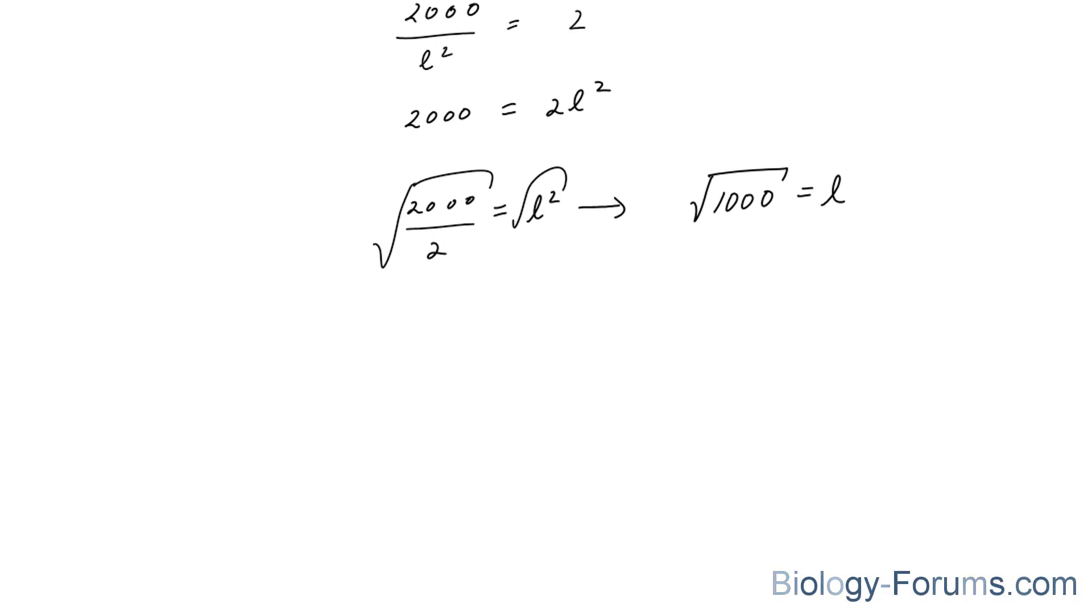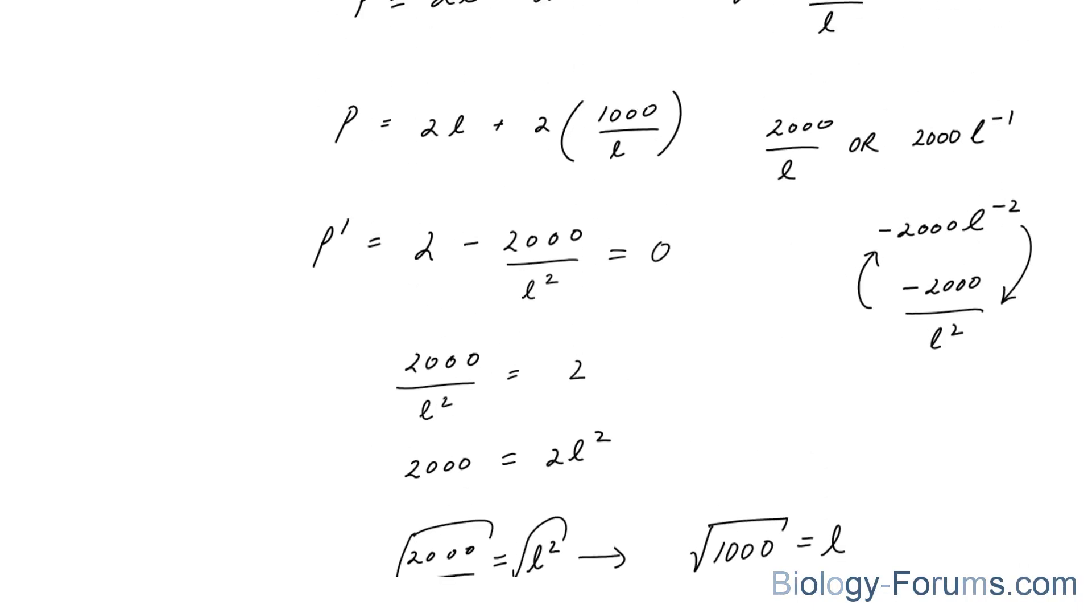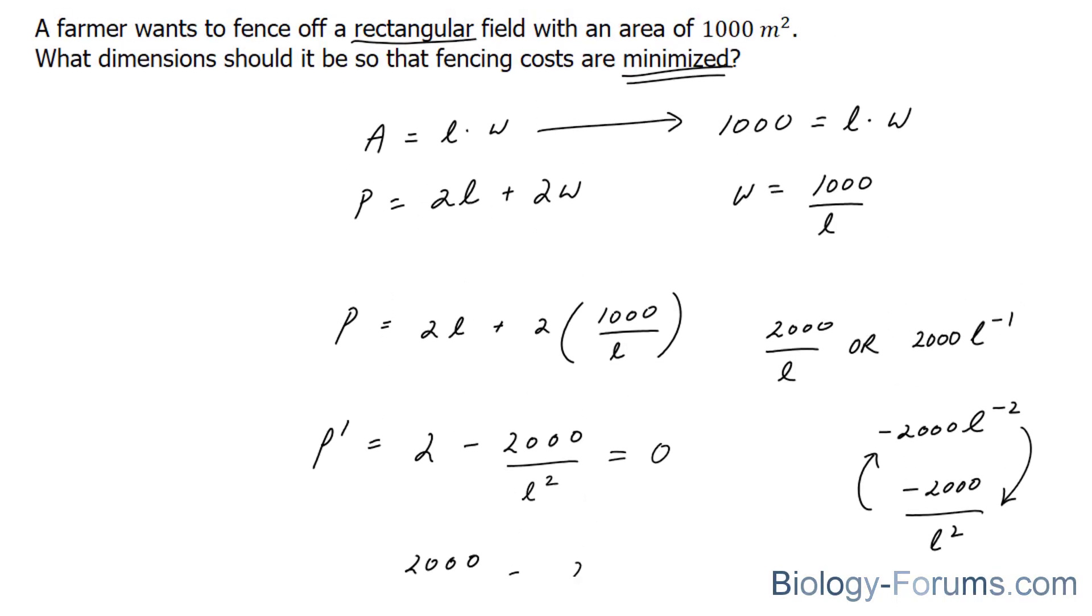And recall that in your original equation, which is stated right here, you had an L variable in the denominator position. The reason why it's important is because that could actually serve as a vertical asymptote.